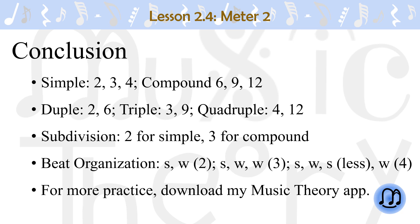In simple meter, beats are divided into 2, and in compound meter, beats are divided into 3. Beat organization is strong weak for duple, strong weak weak for triple, and strong weak less strong weak for quadruple.